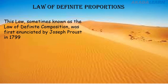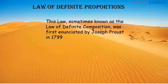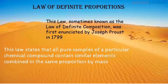Let's now move on to the law of definite proportions, sometimes known as the law of definite composition, first enunciated by Joseph Proust in 1799. This law states that all pure samples of a particular chemical compound contain similar elements combined in the same proportion by mass. For example, pure table salt will always contain sodium and chlorine in the proportion one to one, whether you take it in Nigeria, China, or America.